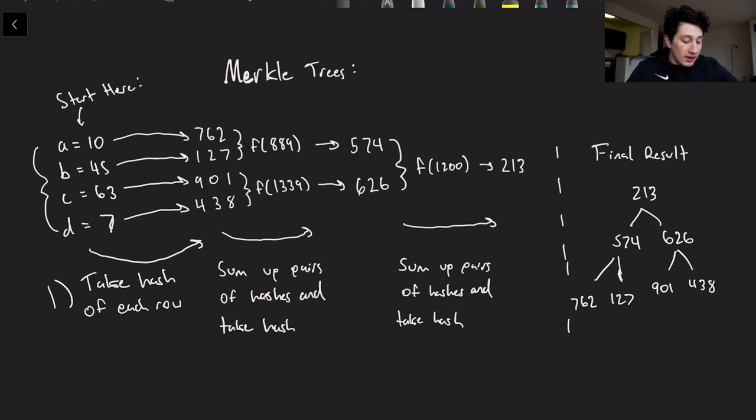So let's create the Merkle tree for our database table right here. So the first thing that we're going to do, this is step one, is we take the hash of each row. So let's imagine that our hash function generates output from zero to a thousand, and these numbers right here are the four outputs that we get from hashing. Then from there, we're going to take all pairs of hashes, we're going to sum them up, and then we're also going to take hashes of those. So in this case, 762 plus 127 is 889, hence why we're taking the hash of 889. And we do the sum again and we take the hash of 1339.